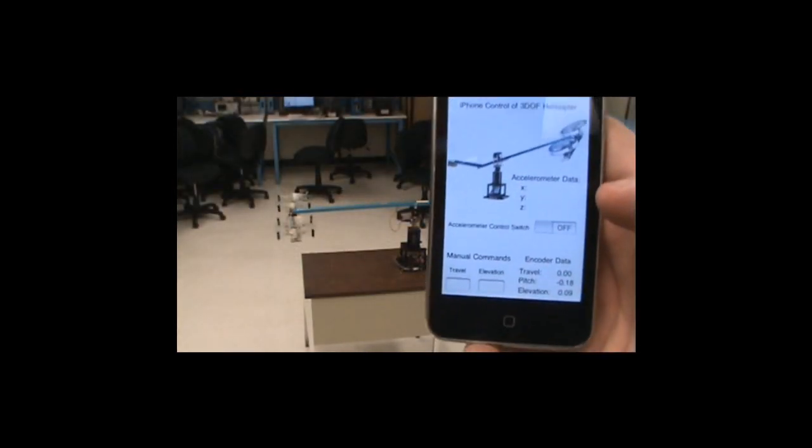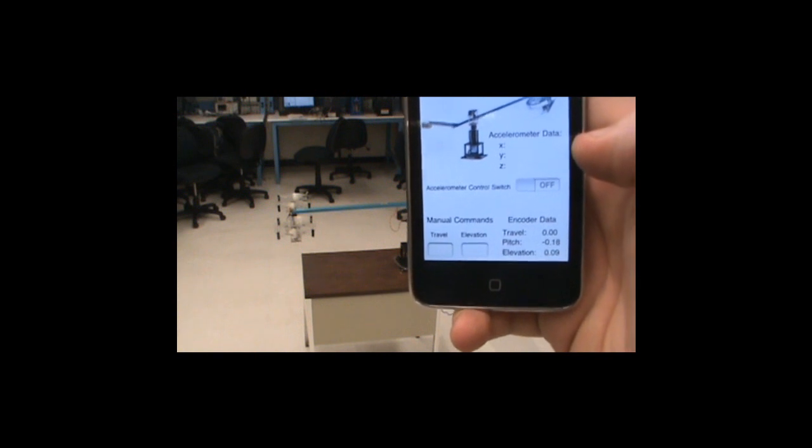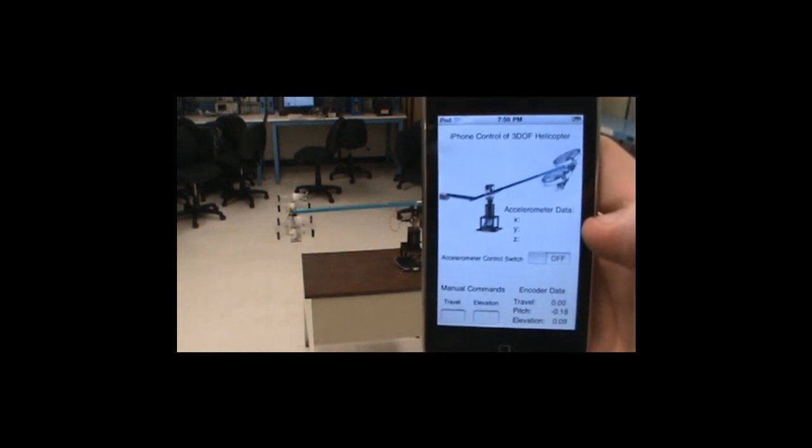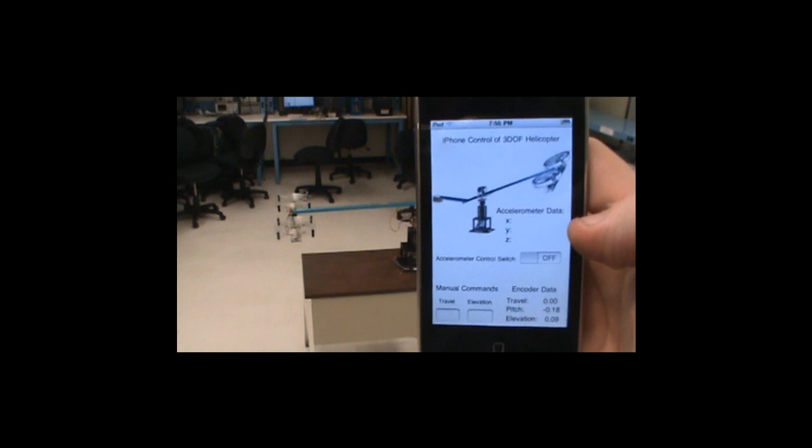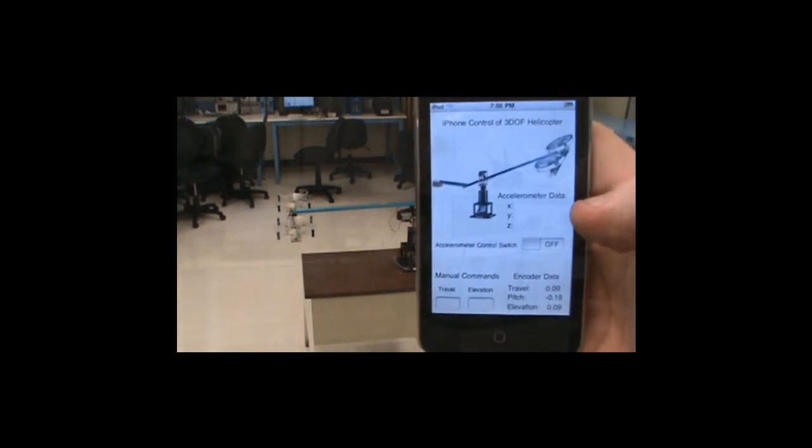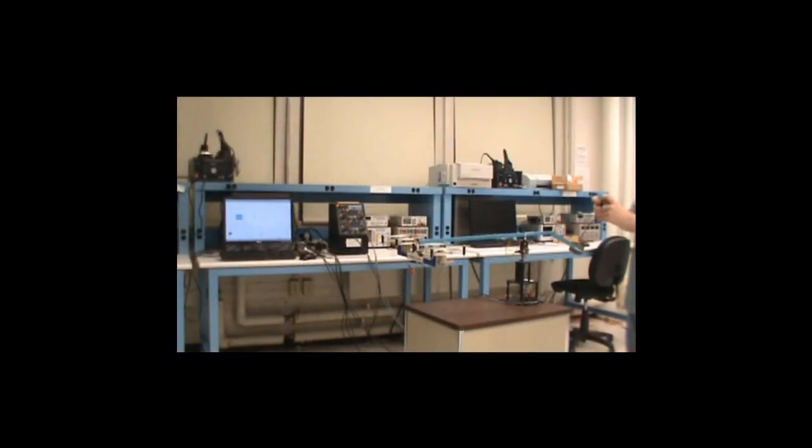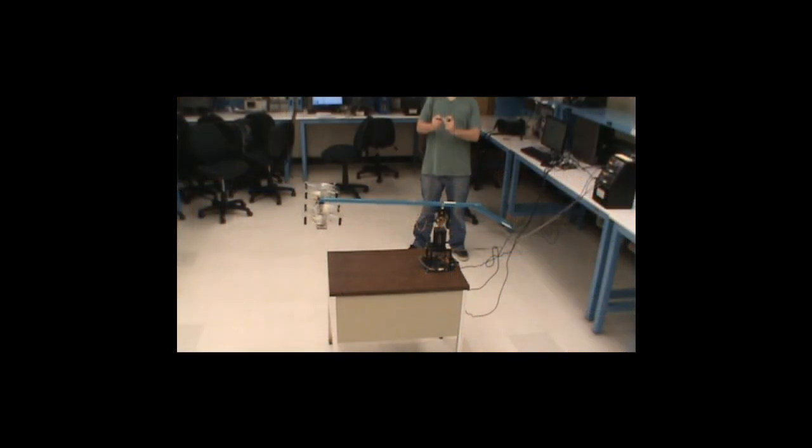Using an iPhone application developed in our lab, we open a Wi-Fi communication link with a PC in the laboratory and, using the TCP-IP networking protocol, command the position of the helicopter as well as receive back sensor data regarding the helicopter's three degrees of freedom: travel, pitch, and elevation.